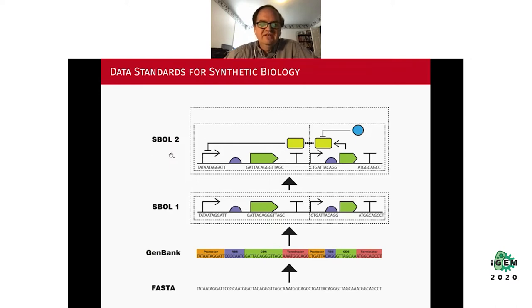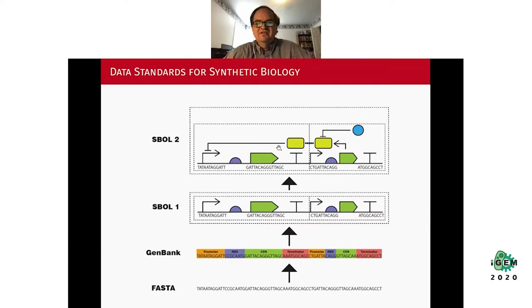The SBOL data standard is actually two standards: there's a standard for representing the low-level details of genetic design information, and it's also a visualization standard. Various articles use different glyphs to represent different parts; SBOL tries to standardize that so that whenever you see a promoter it's always a bent arrow, a coding sequence is a box with an arrow shape, a ribosome binding site is a half circle, and a terminator is a T shape.